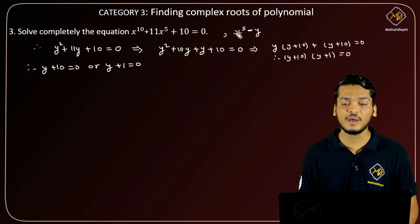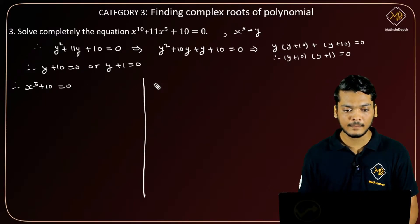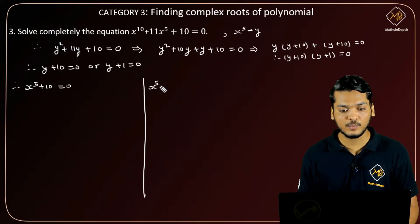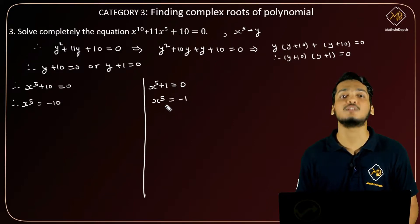Now we substitute back, so therefore x^5 + 10 = 0 or x^5 + 1 = 0. So therefore x^5 = -10 and x^5 = -1.